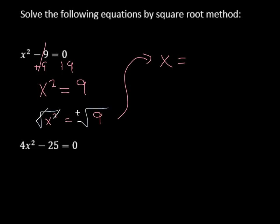We get x is equal to, and then on the right-hand side we have plus or minus, and then take a look over here, what's the square root of 9? Well, the square root of 9 is 3. So over here are two answers.